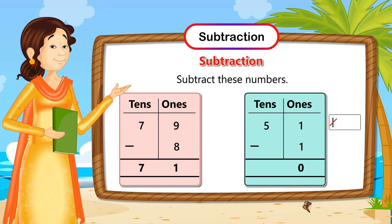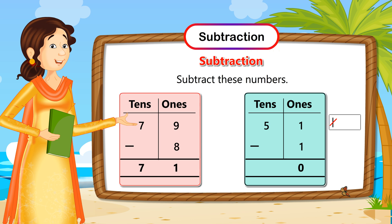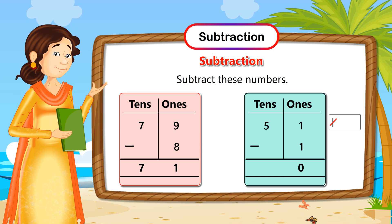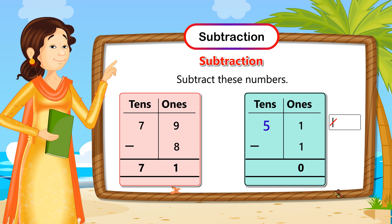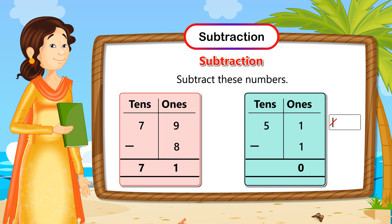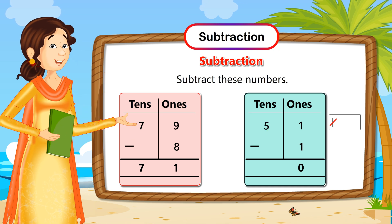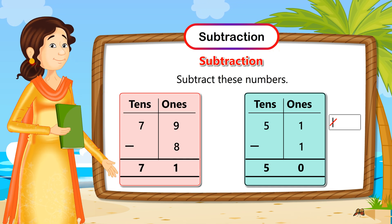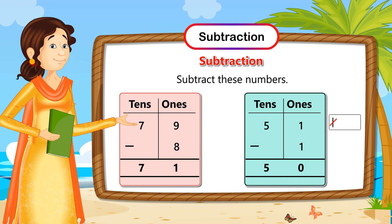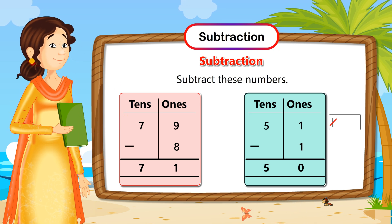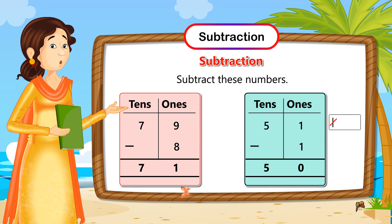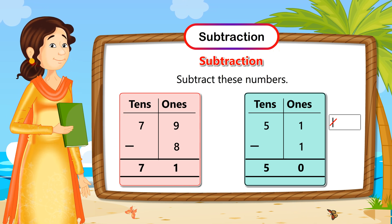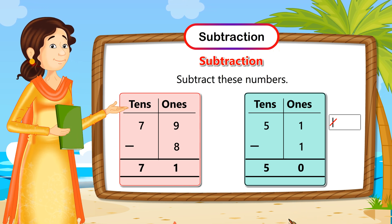Now we will move to the 10s column. In this column we have only 1 digit, so we will write it as it is in the 10s column. So 51 - 1 is 50. See you next time.